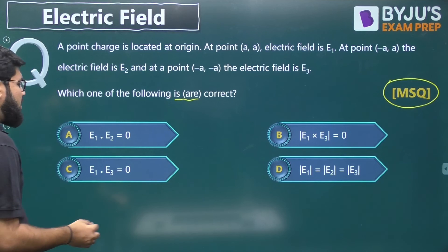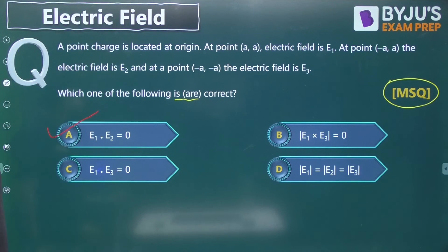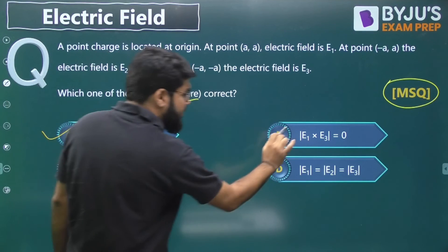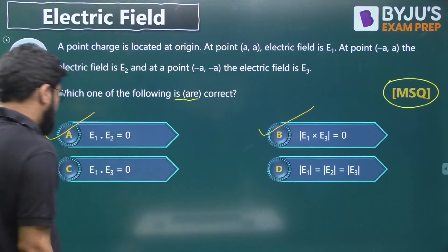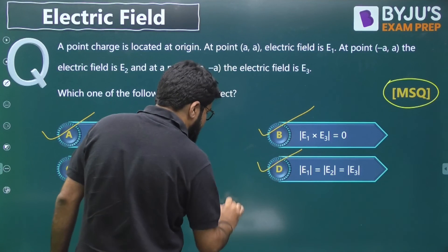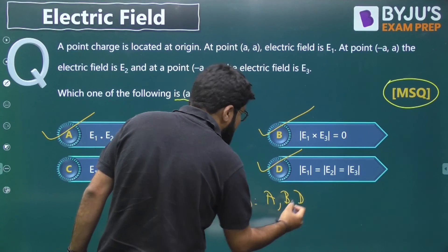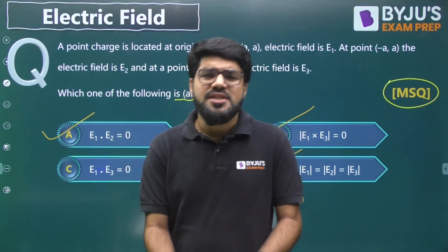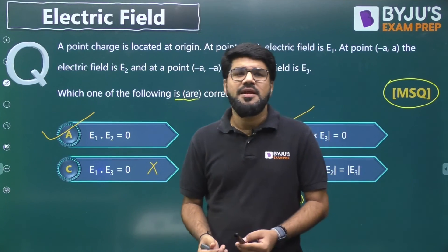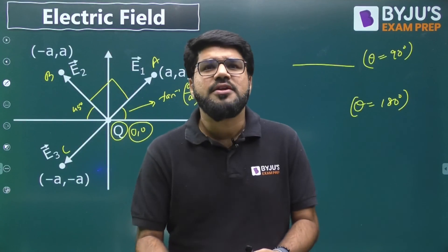So for this MSQ question, the correct options are: E1 dot E2 = 0 (option A — correct), E1 cross E3 = 0 and hence its magnitude is also 0 (option B — correct), E1 dot E3 = 0? No, that is not correct. And the moduli of all three electric fields are equal (option D — correct). So the correct answer for the MSQ question is A, B, and D. This is based on basic understanding of direction and the basic knowledge of electric field formulation, but it can be a two-marker MSQ question in the GATE examination.